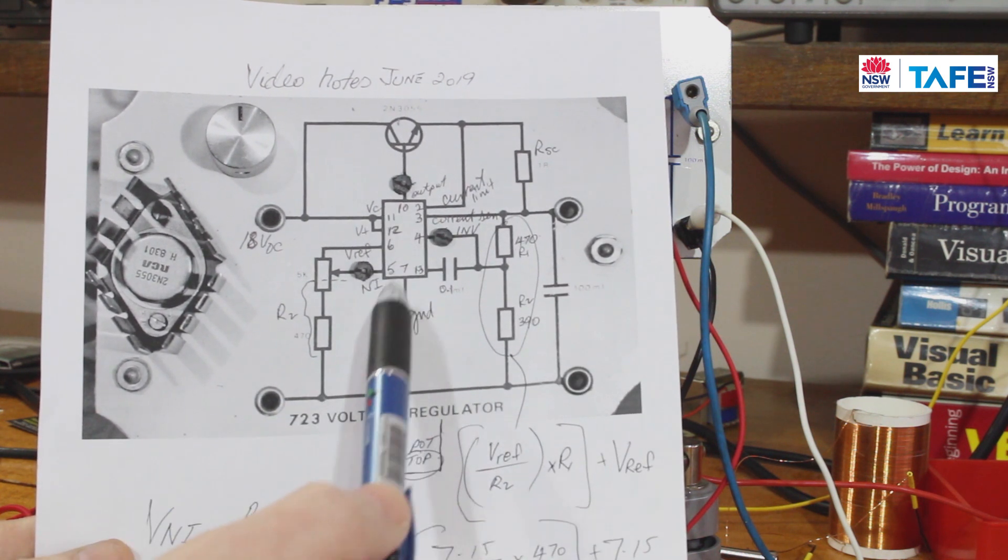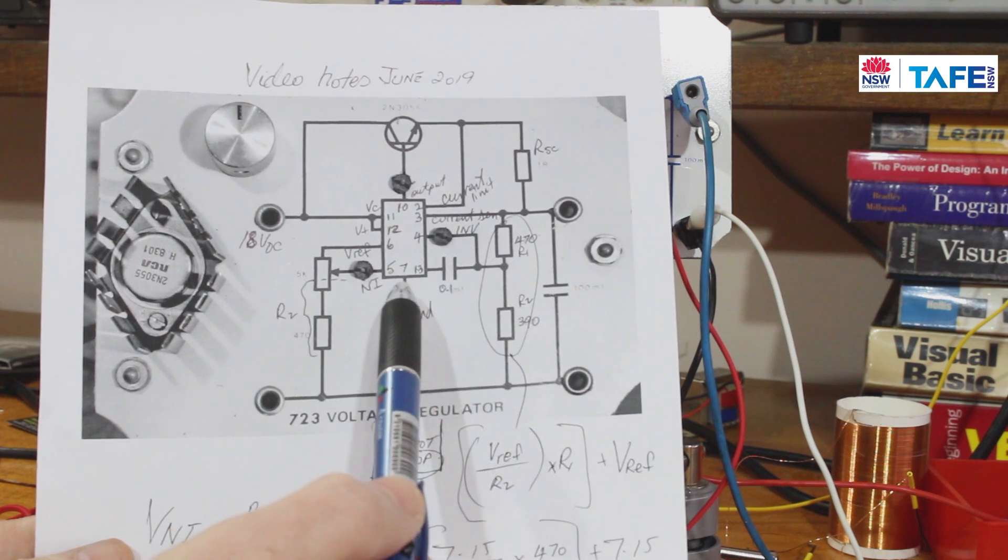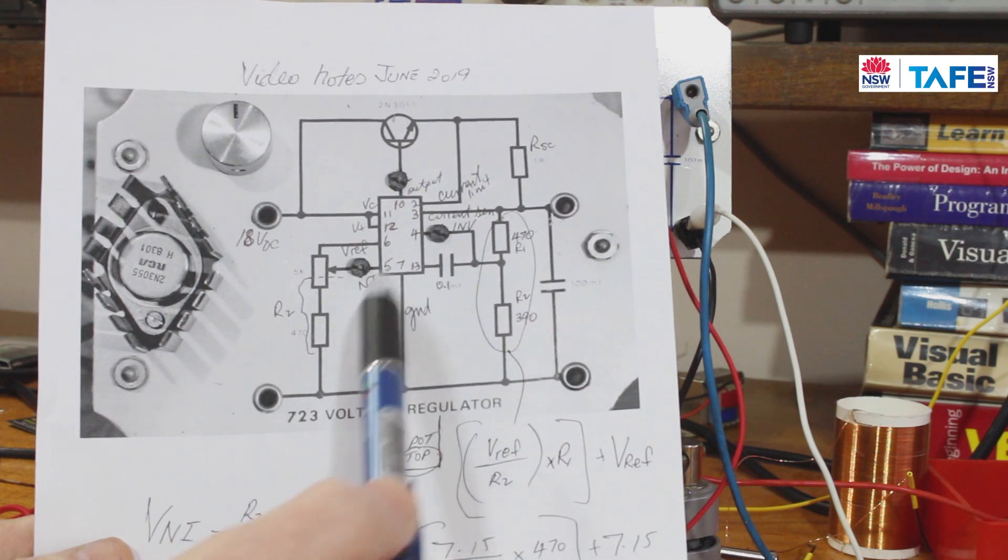The thing you have to know about the 723 is you have to have a little bit of an appreciation of operational amplifiers, differential amplifiers.